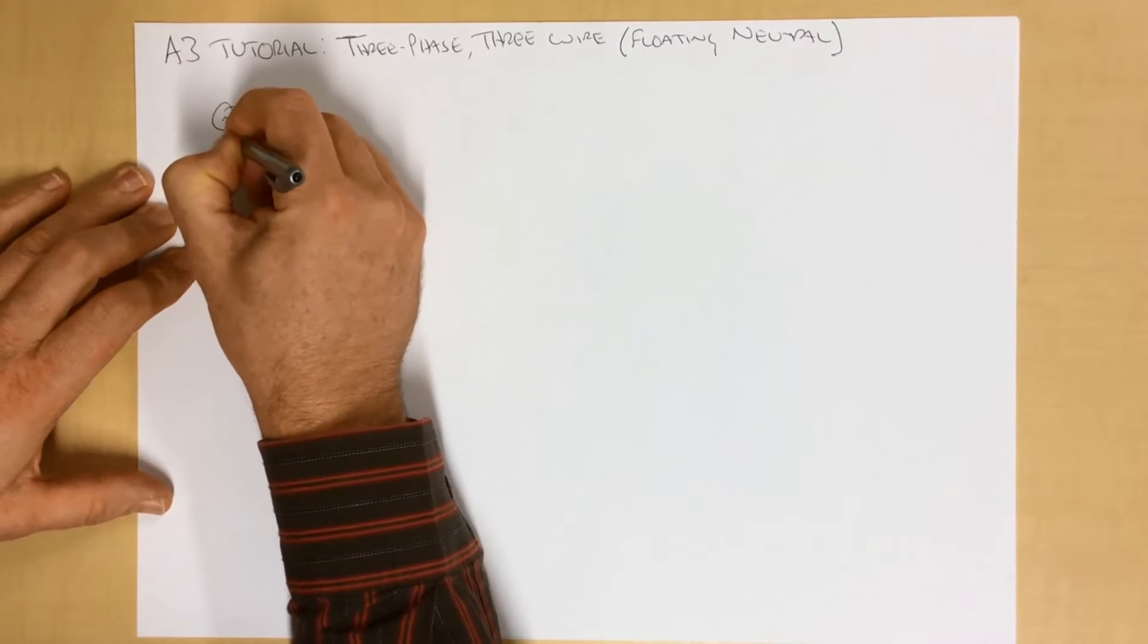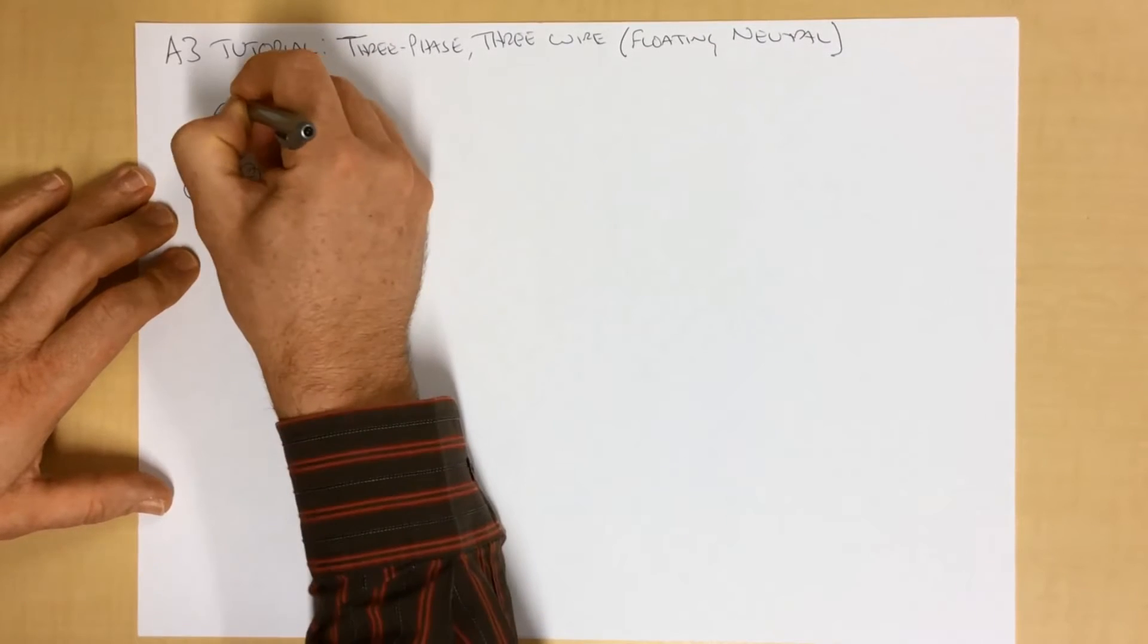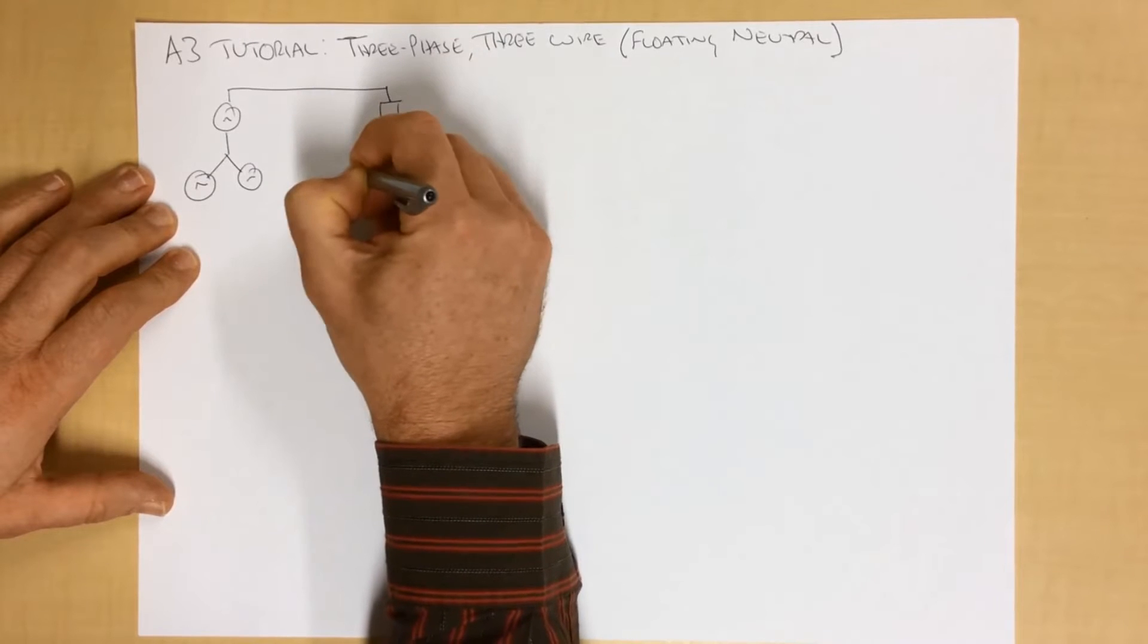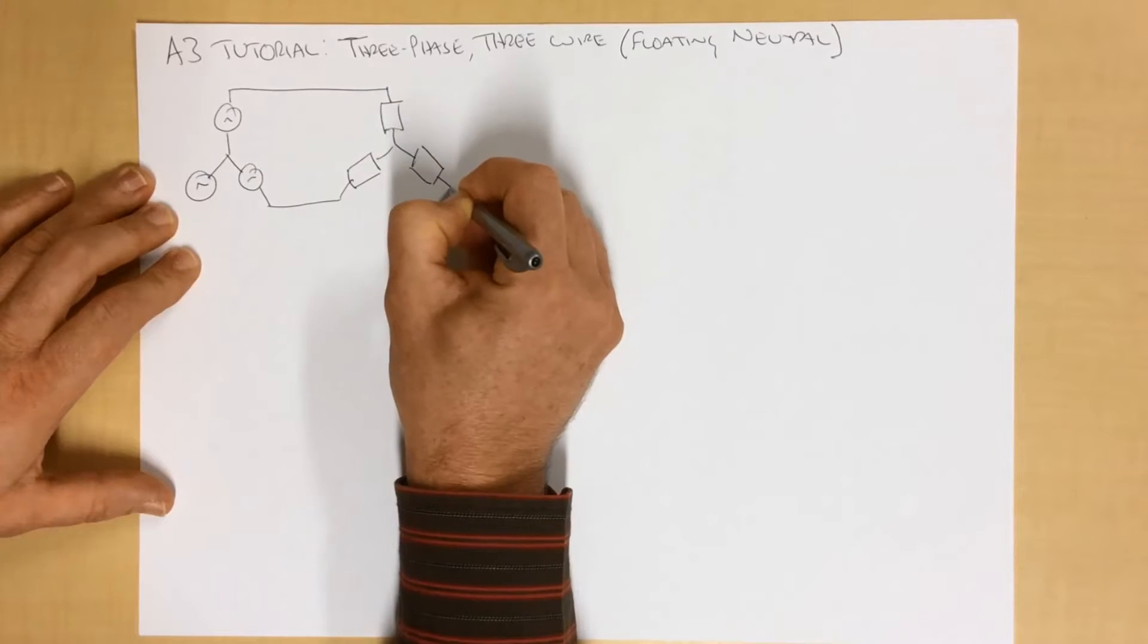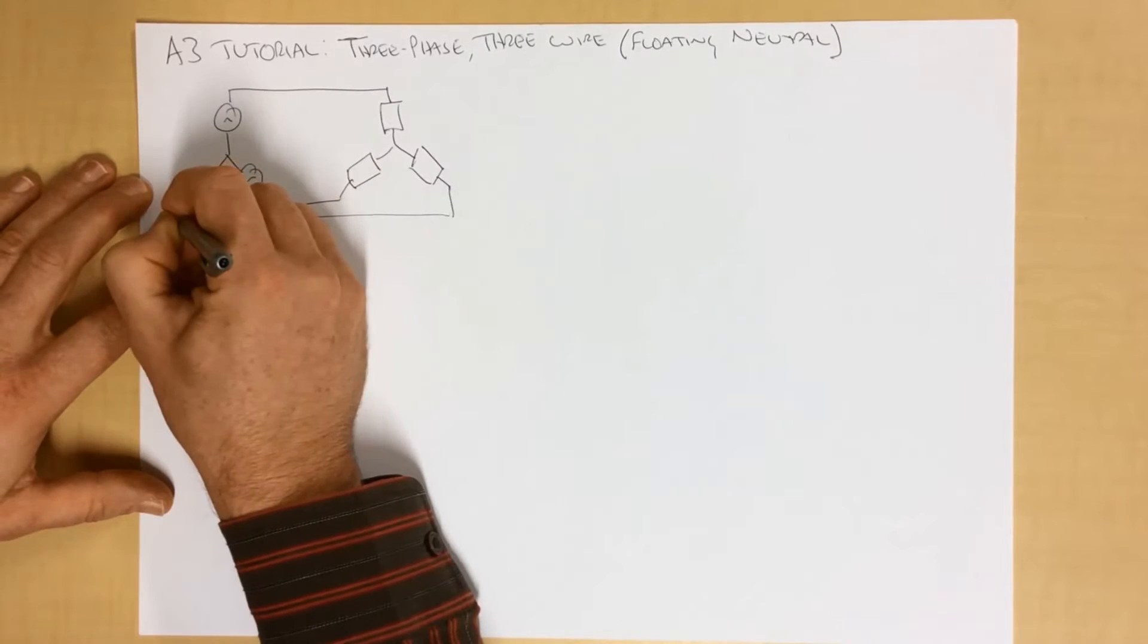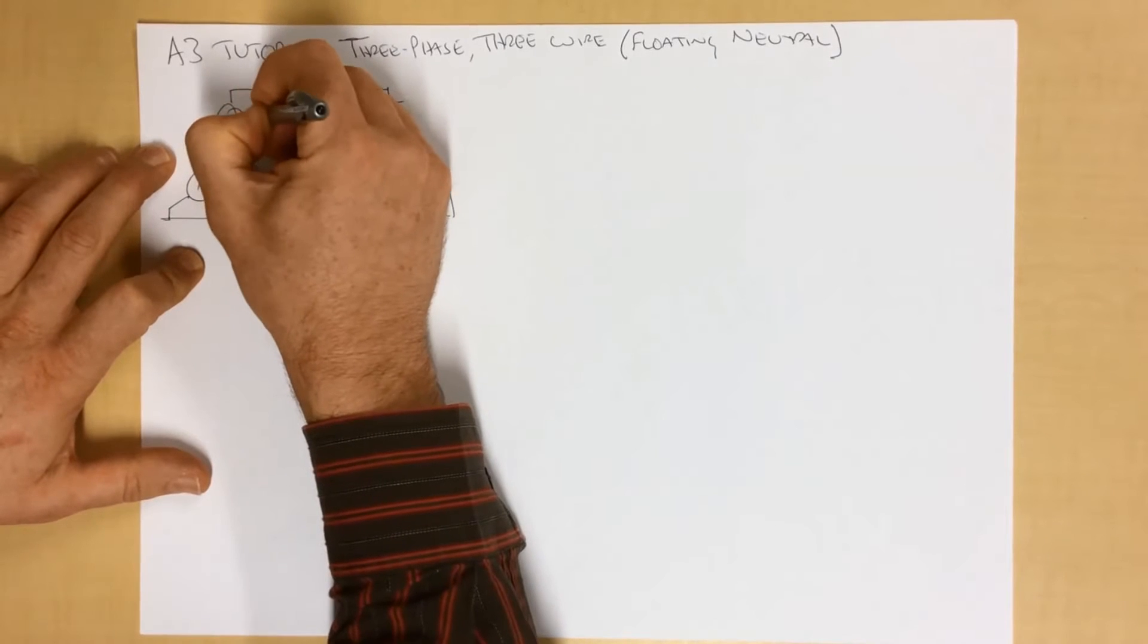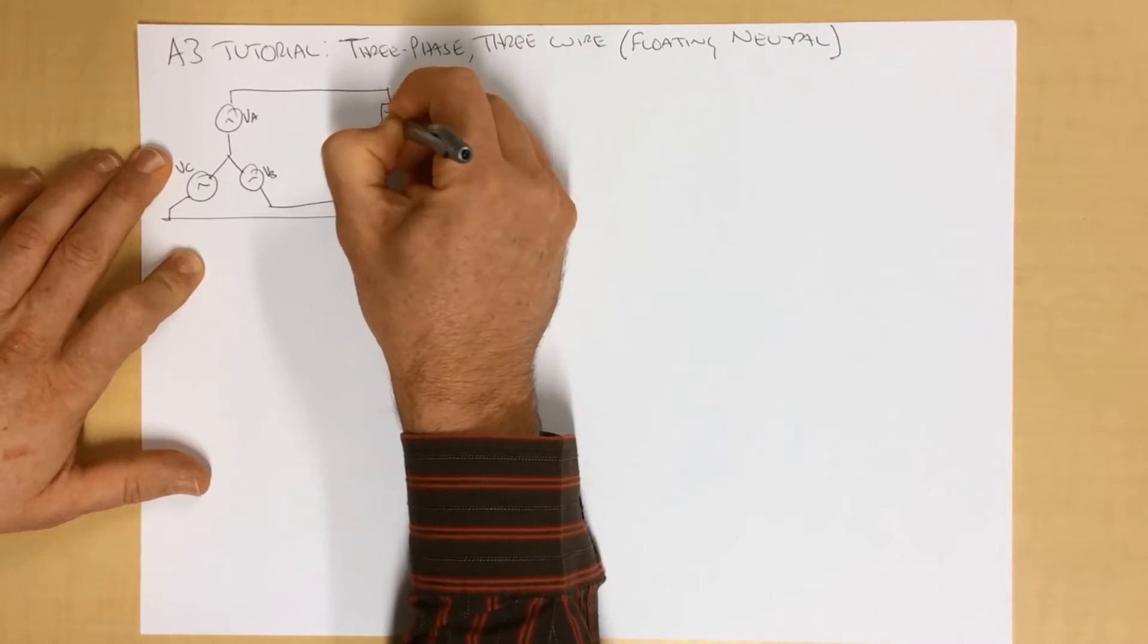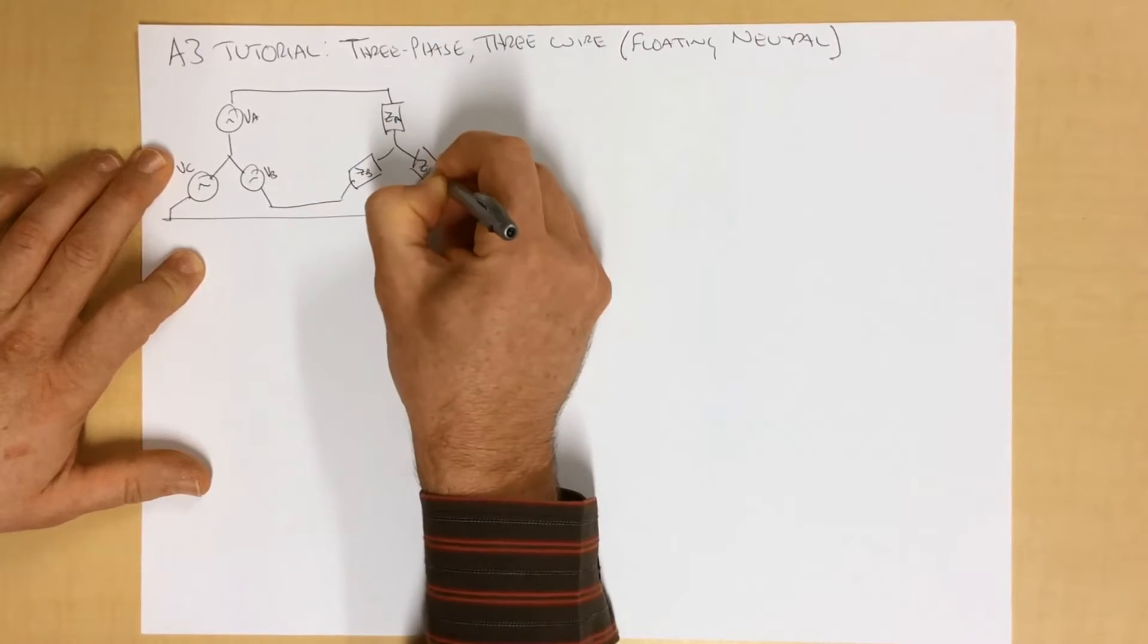So here we have our three-phase supply, which feeds off to our three-phase load. And we'll call these VA, VB, VC, that will be ZA, that will be ZB, and that will be ZC.